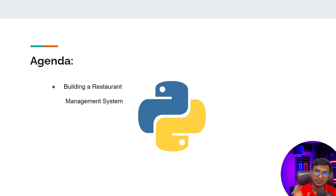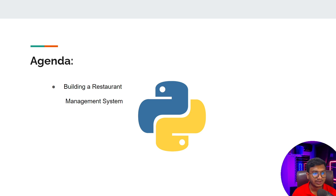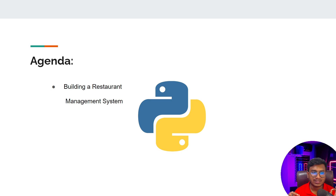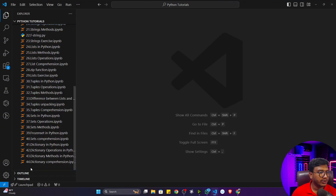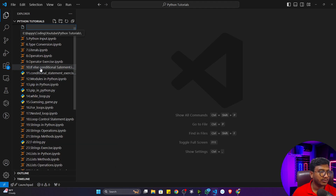Advanced projects will be implemented after completing this Python course. This is a very basic project — we'll only be implementing the structure with programming. I'm not going to implement any UI or UX for this project. So let's go to our editor and implement this.